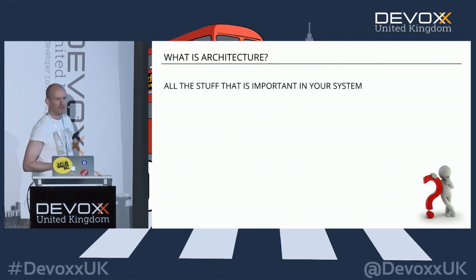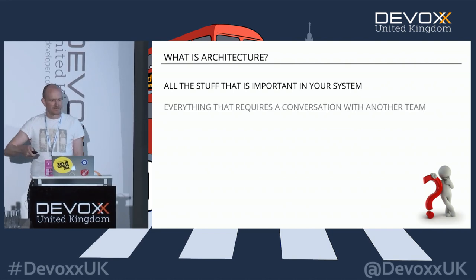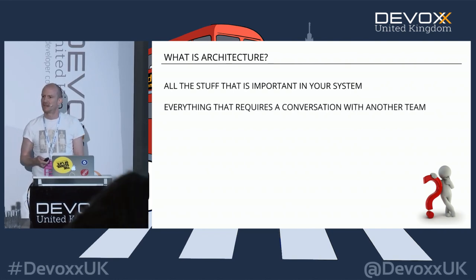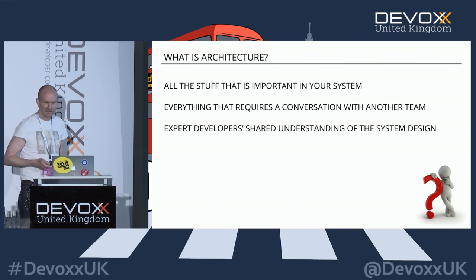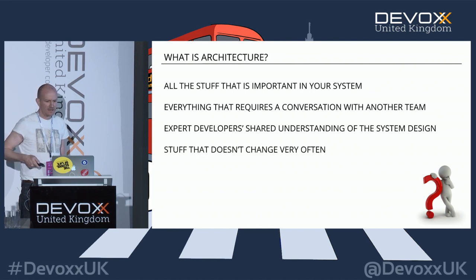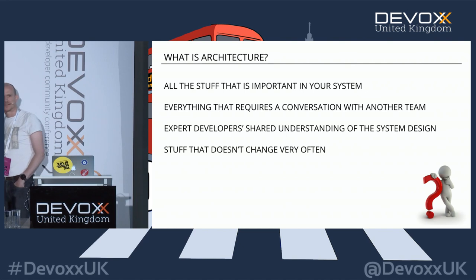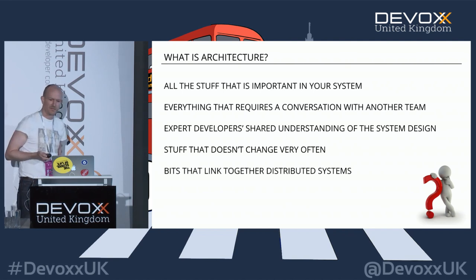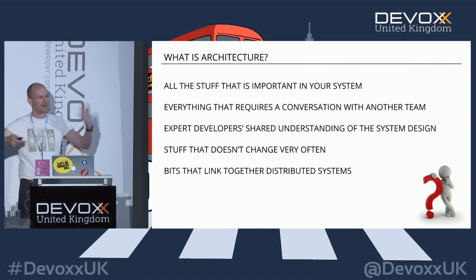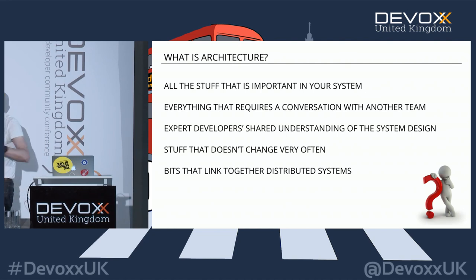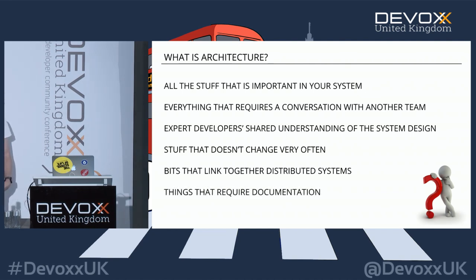Here are some of those answers: 'All the stuff that's important.' 'Everything that requires a conversation with another team' — that's an interesting definition. 'Expert developers' shared understanding of the system design.' 'Stuff that doesn't change very often' — I think that one starts to be quite useful, actually. 'Bits that link together distributed systems' — from somebody working on a microservices project who thought the architecture was all the RabbitMQ messages between components. And 'things that require documentation' — so nothing, then?